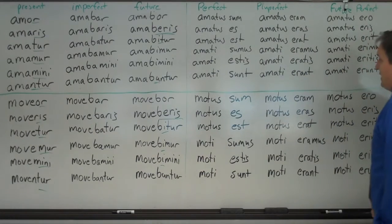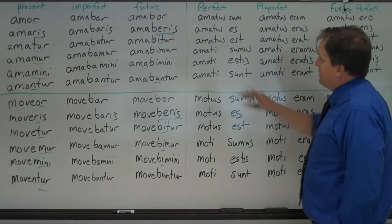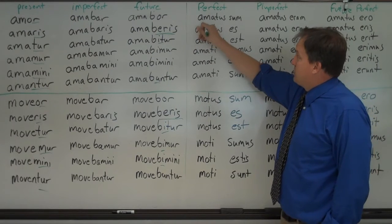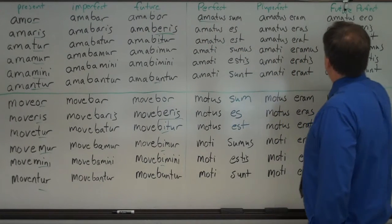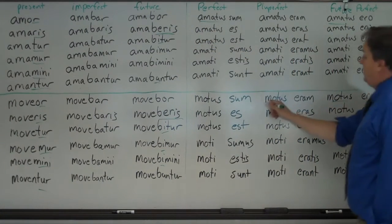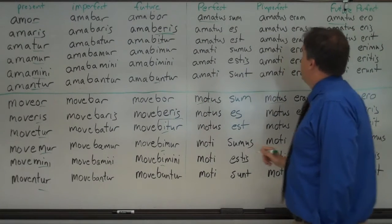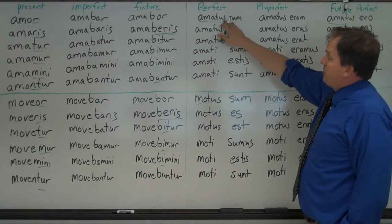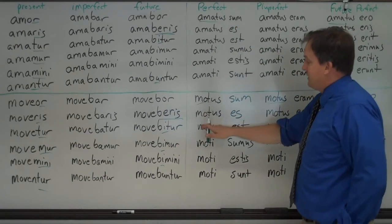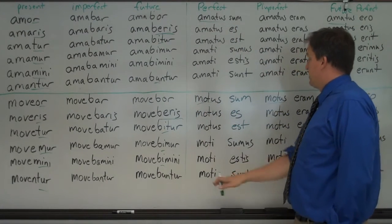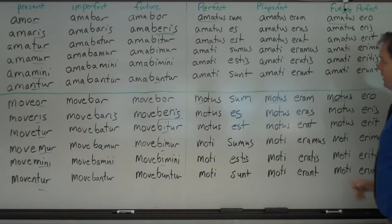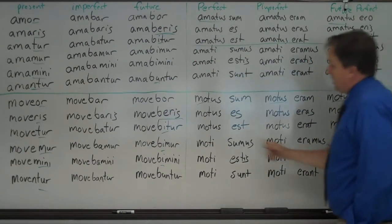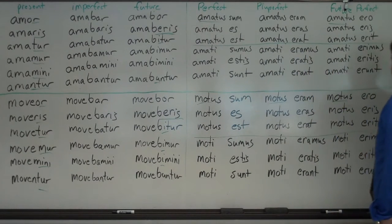Now the perfect system is a lot different in that we're using the fourth principal part, the perfect passive participle, for the perfect, pluperfect, and future perfect. And so amatus, the fourth principal part of amo is amatus. You go ahead and use that. Same thing here with motus. Now you say, oh, what happens here, Mr. Davis? Well, remember, the fourth principal part is an adjective.